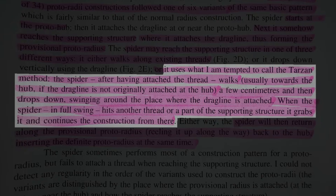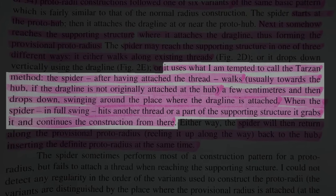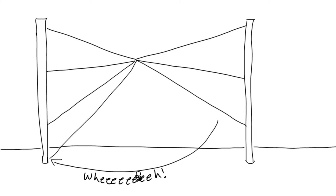From there, they built the proto-hub — a structure where several threads attached to the supporting structure joined together at a single point. There were three ways to make a thread from the hub to the supporting structure: walk along an existing thread, drop down on a drag line letting gravity do the work, or what Shaka delightfully calls 'the Tarzan method' — the spider attaches a thread, walks a few centimeters, drops down, swings around, and when it hits another thread or the supporting structure, grabs it and continues construction.